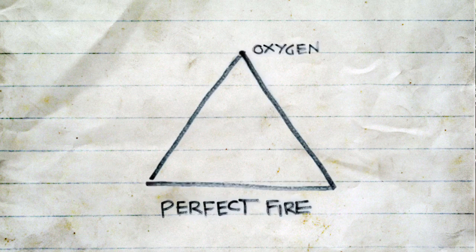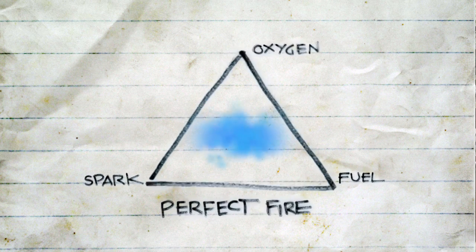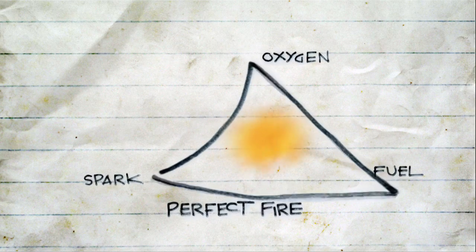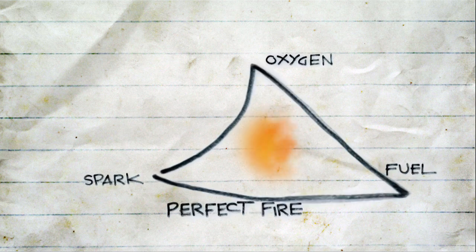The Triangle of Fire consists of three equal parts: oxygen, spark, and fuel. If we can get those components evenly matched, we're going to get the greatest amount of heat or BTUs. If I change the fuel level and put too much fuel with not enough oxygen, I'm going to get a lot of smoke, low temperatures, and low BTUs.